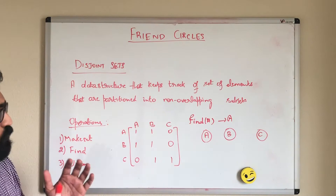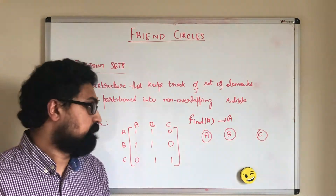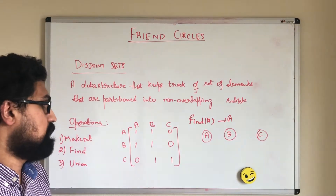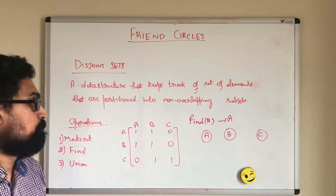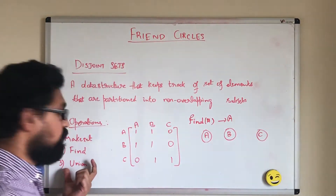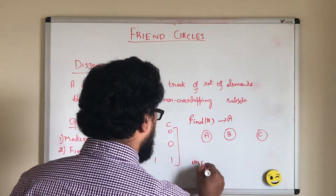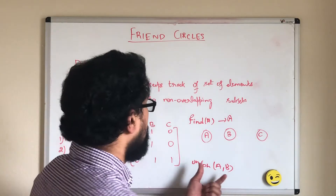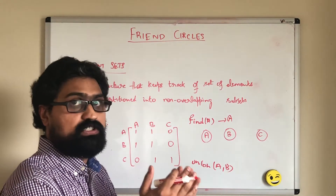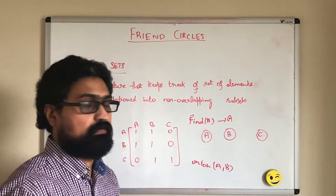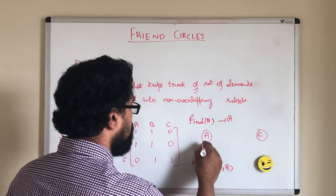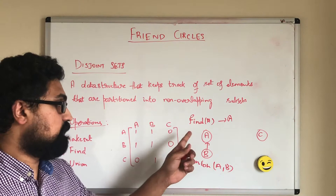A union of two sets will merge them together and the merged set will have a single representative. For example, if we take A and B — from the matrix we know A and B are friends — so we can merge them together to form a single circle by calling union of A and B. Now these two form a single set, so we elect one representative. We can make either A or B as the representative. For now we choose A, so B will be pointing to A. B's representative is A and A's representative is himself.